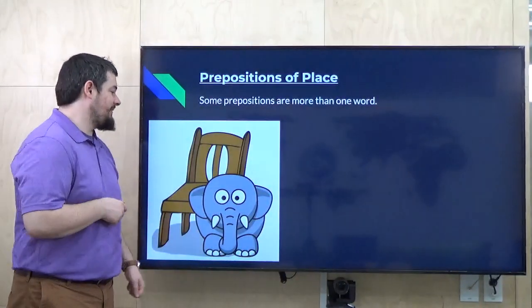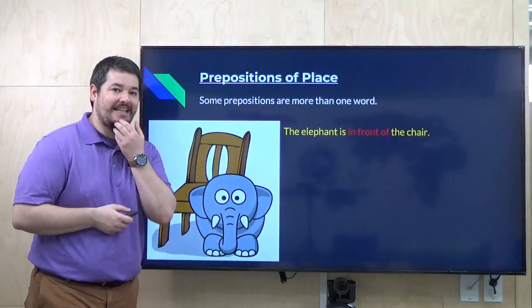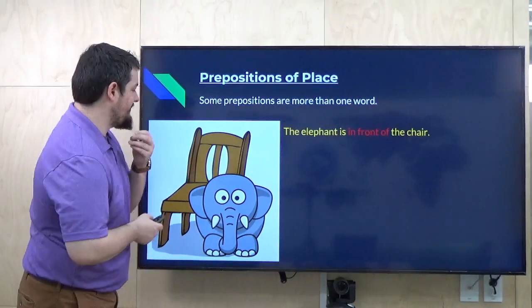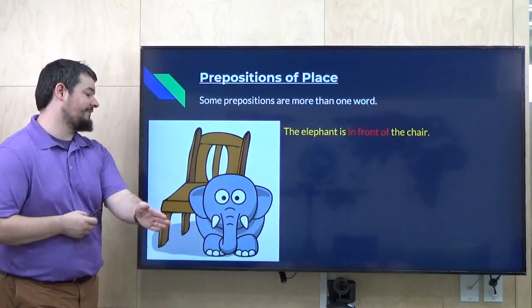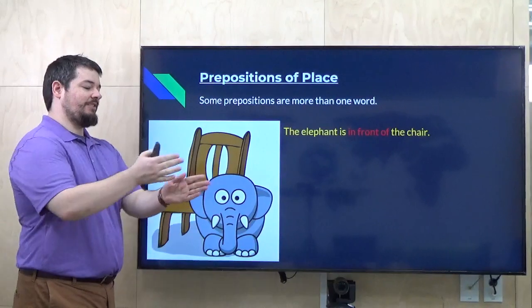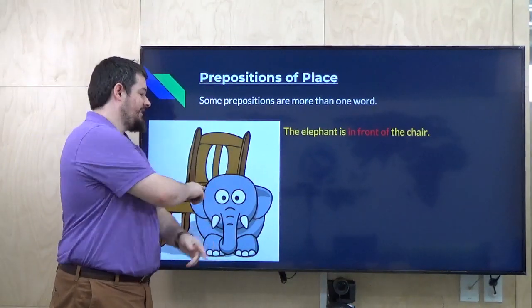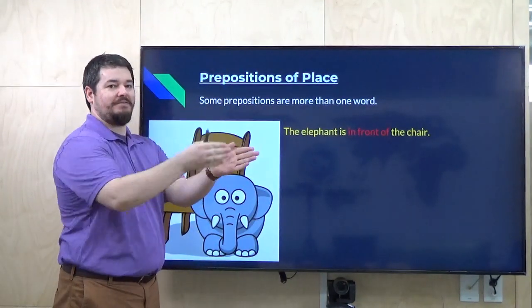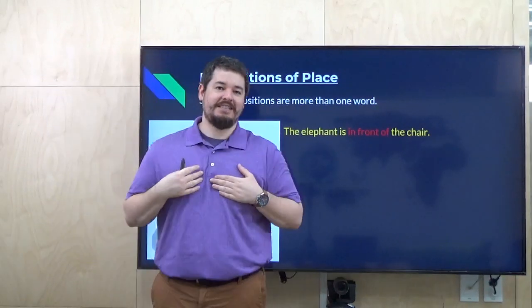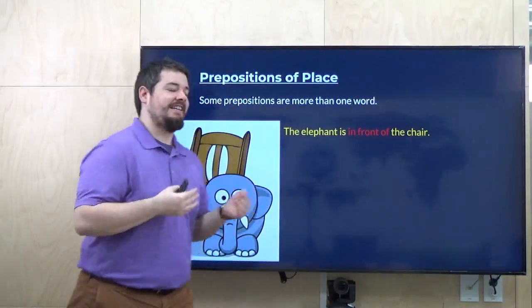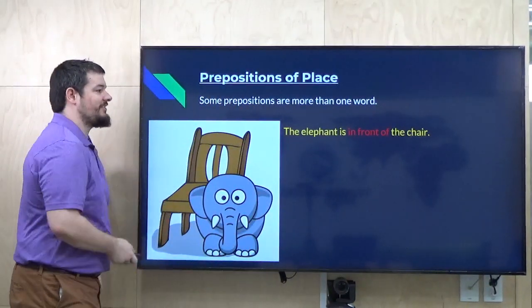Here we have an elephant in a chair. If I ever say, where is the elephant? You would say, the elephant is in front of the chair. Much like earlier we had 'behind,' in this case it's 'in front of.' I am in front of the TV. The elephant is in front of the chair.